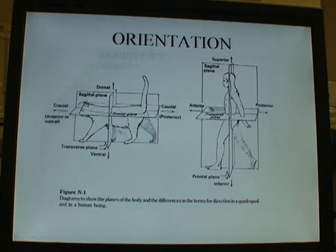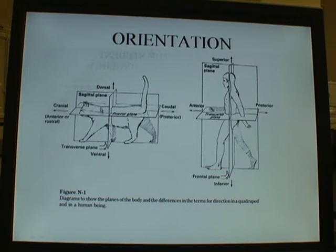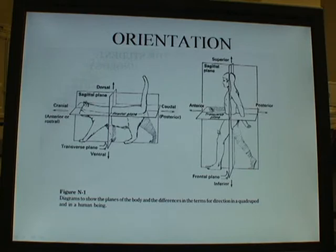Just so everyone understands, these are the basic orientation planes for reference. I will use the term dorsal to describe the back of the animal. The laterals are the left and right. If there is an image that's a cross-section, the synonym for that is a transverse section. Note that orientation changes slightly for bipedal organisms like humans.